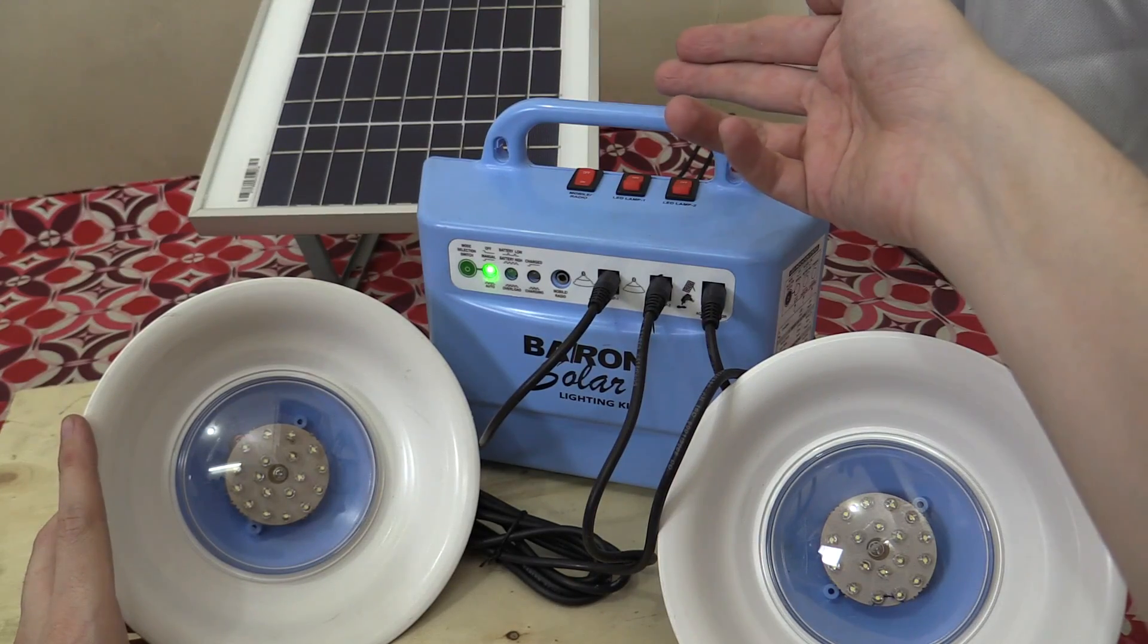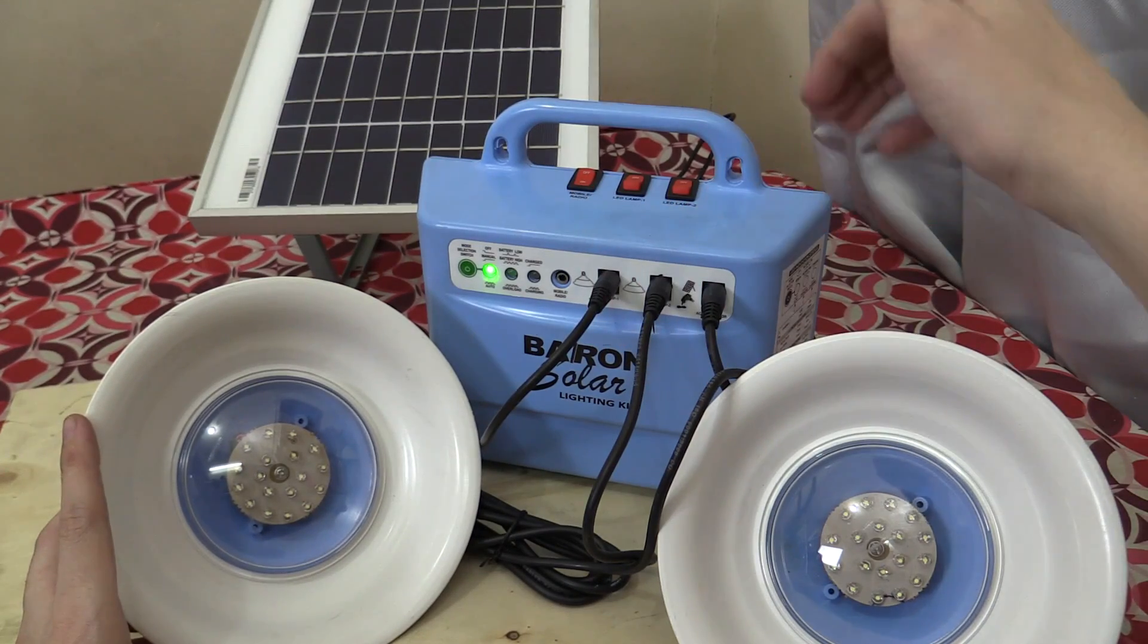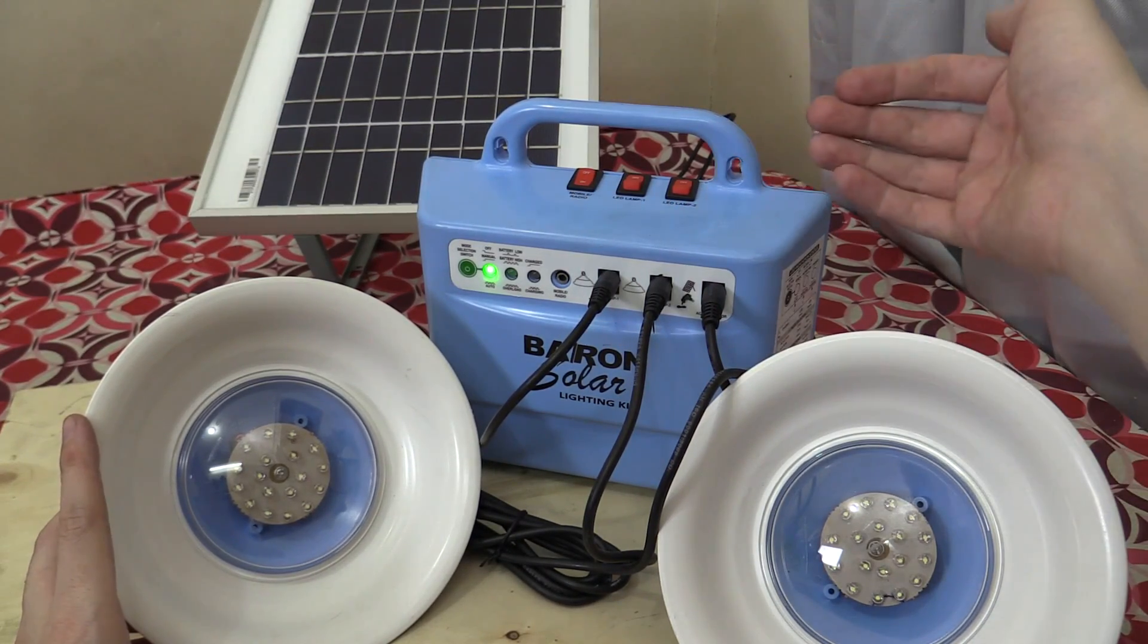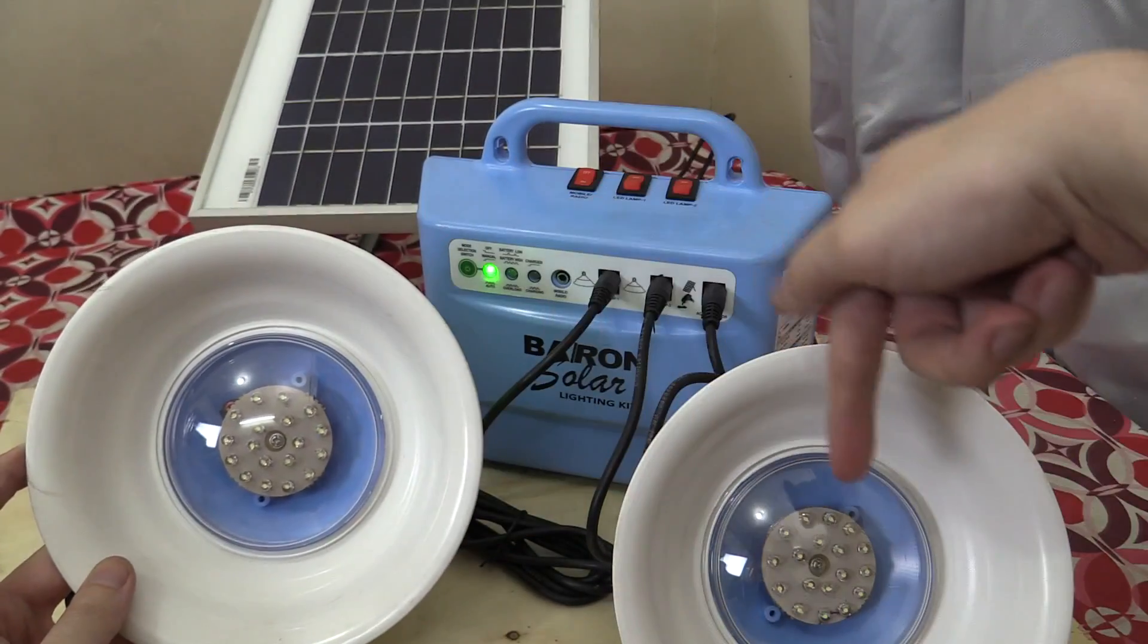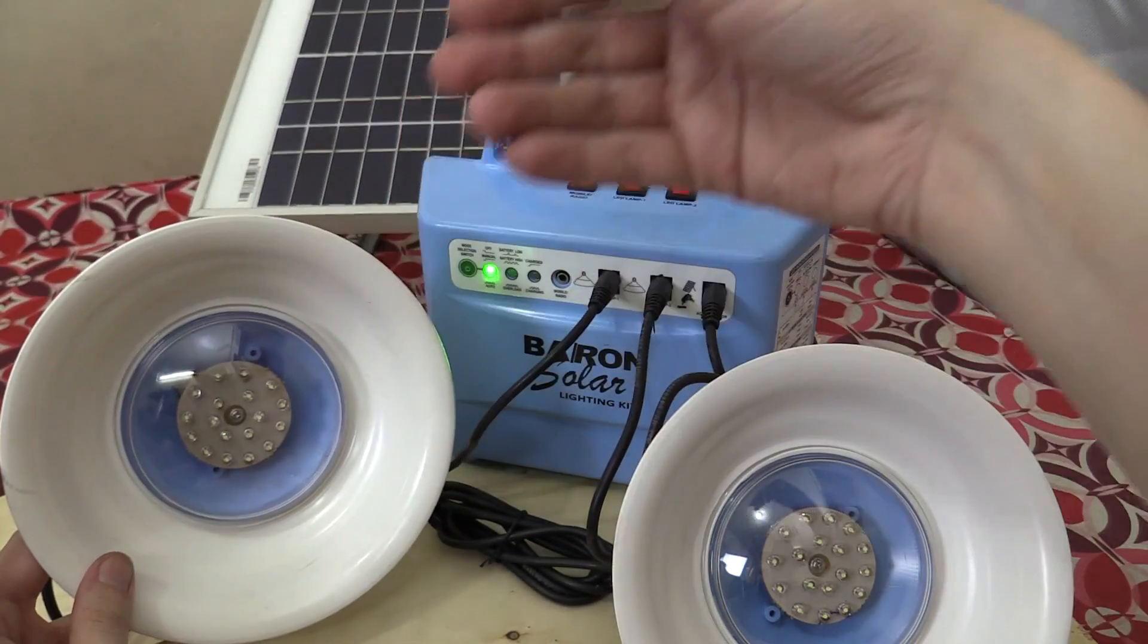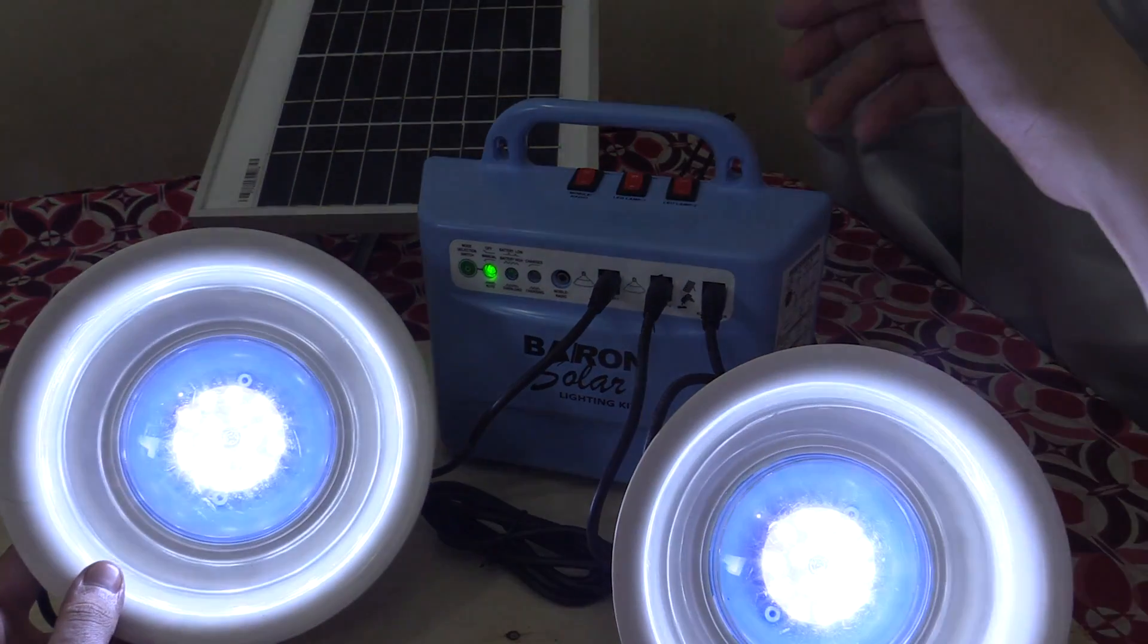So your solar panel's been out in the sun all day, and you've got a fully charged battery. Good job. But now you want to use the energy that's been stored through the day. What do you do? Well, of course it comes with these two lights, and these are LED-based, which means you get a lot of light without using a lot of power. And they're individually switched, so we can turn on this one, and we can turn on this one.